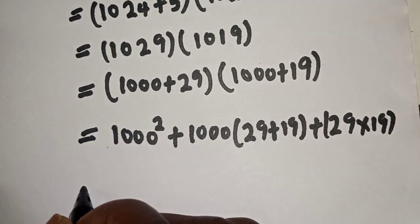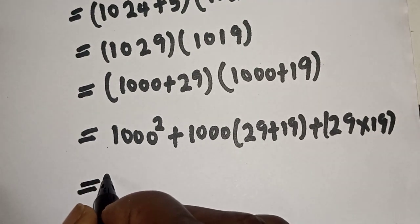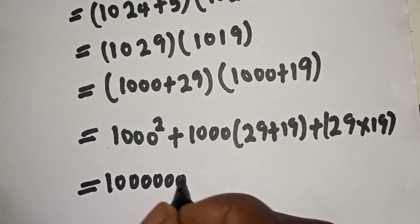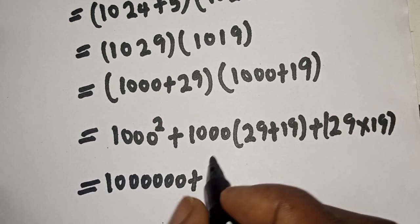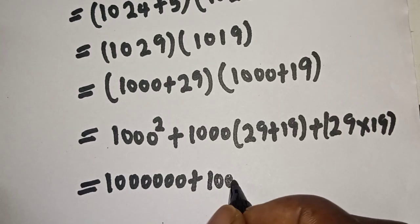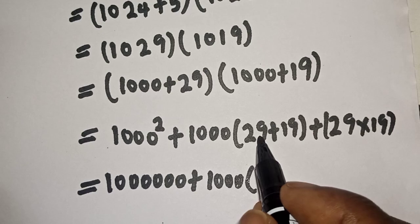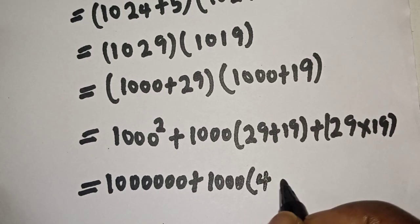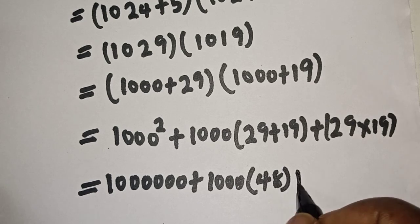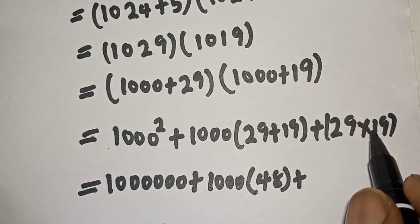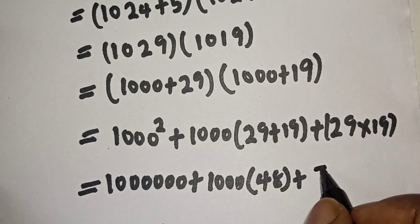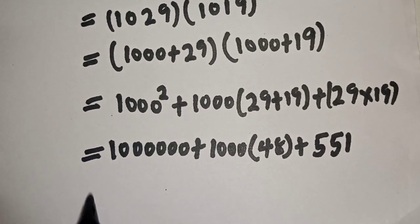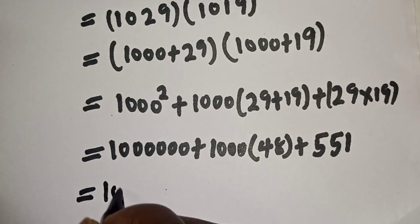This is equal to 1000 square, we have 1 million, plus 1000 bracket 29 plus 19, that is 48, plus 29 times 19, we have 551.